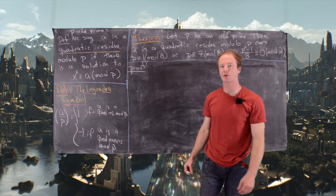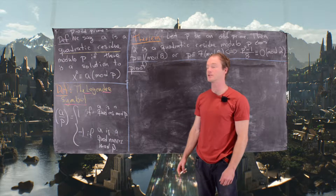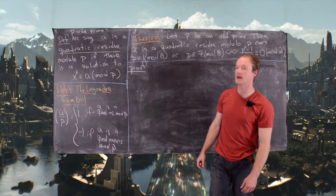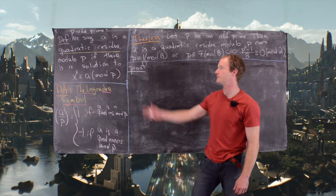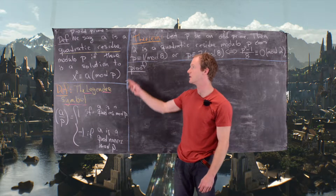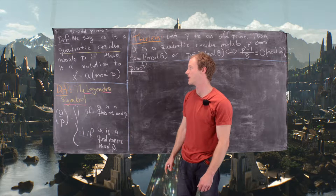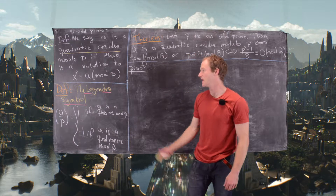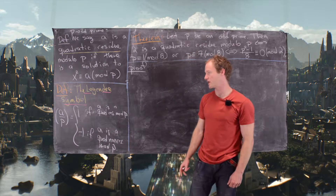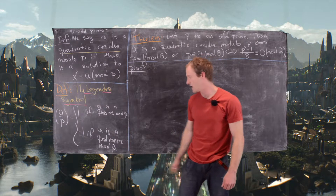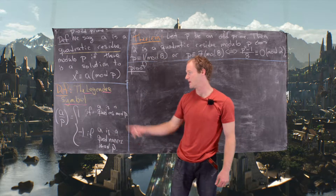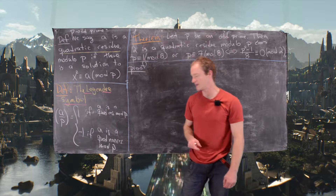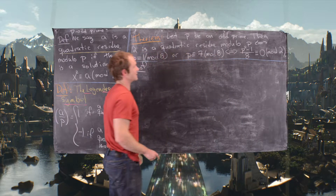In this video we're going to look at which primes have a square root of 2 modulo p — in other words, we're going to look at quadratic residues modulo p and answer the question: when is 2 a quadratic residue? Recall that a is a quadratic residue mod p if there's a solution to x² ≡ a (mod p). We'll also make use of the Legendre symbol, which asks: are you a quadratic residue mod p? The symbol (a/p) equals 1 if yes, and −1 if not.